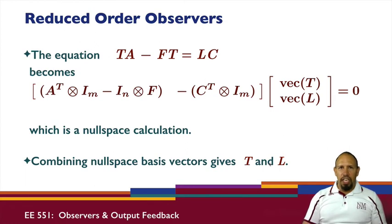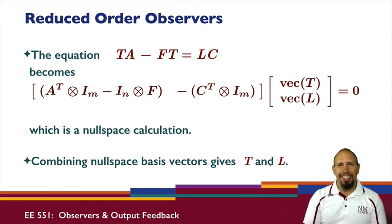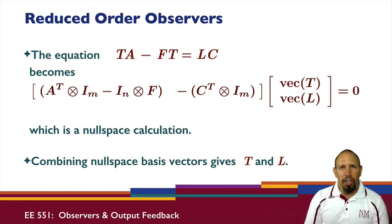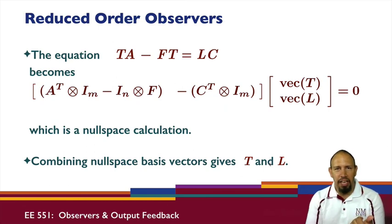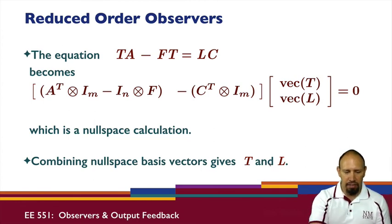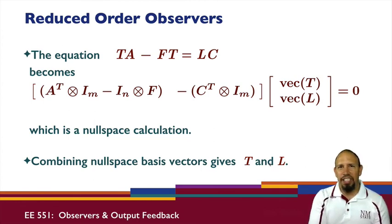In the reduced order observer calculation, I actually have a function that I've developed for this purpose for MATLAB. If we use the reduced order observer, we can pick F, and we can obviously pick it to be a stable thing. Then we need to compute the T and the L from that. This is the reduced order observer. Stay tuned and we're going to talk about how to use observers for feedback.